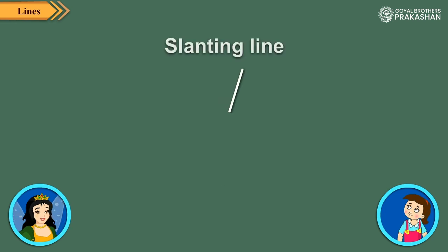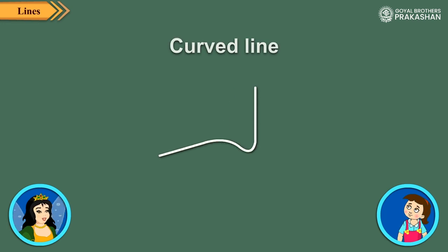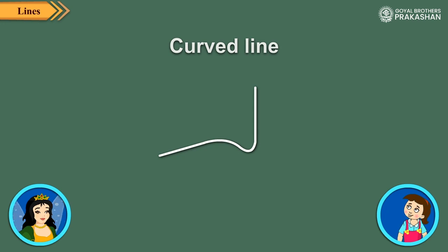This is a slanting line. The lines that are bent are called curved lines. We can draw a number of different shapes using straight and curved lines.